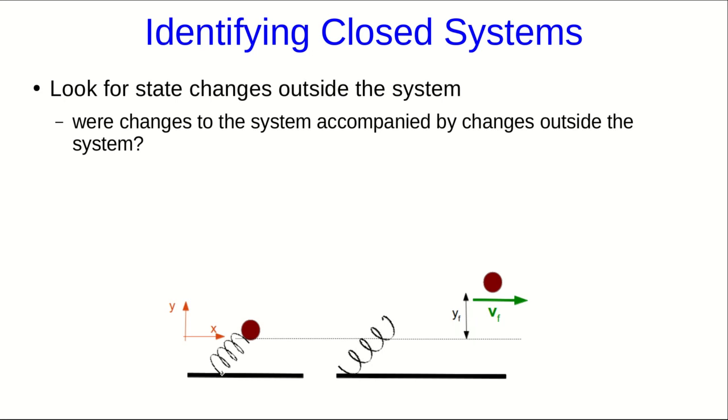In other words, we want to know whether there were changes to the system that were accompanied by changes outside the system. Now, for most people, this is quite counterintuitive when they first see it, but I hope this example is going to make it clear to you, and in any case, practice will certainly make it clear to you. I'm going to define my system first as just the ball, and let's see what happens when I do that.